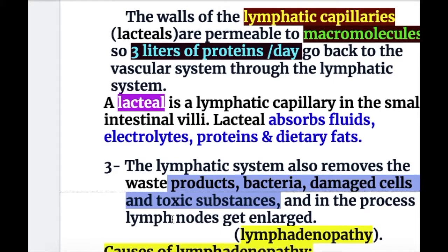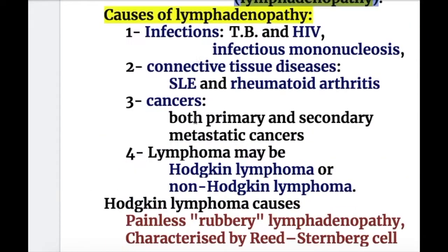In the process of removing waste, the lymph node gets enlarged, which is known as lymphadenopathy. The causes of lymphadenopathy include: infections such as tuberculosis, HIV infection, infectious mononucleosis, or any chronic or viral infections; connective tissue and autoimmune disorders such as systemic lupus erythematosus and rheumatoid arthritis; and cancers, both primary and secondary metastatic cancer.